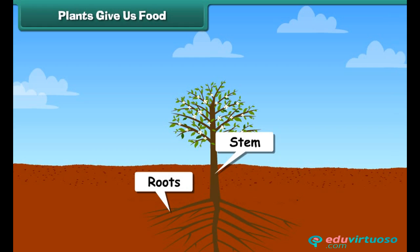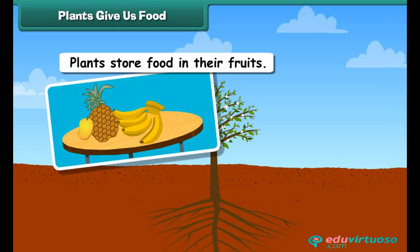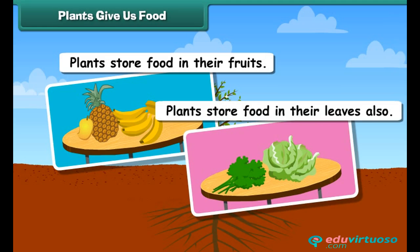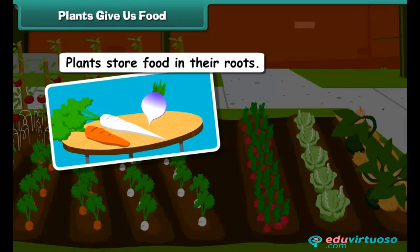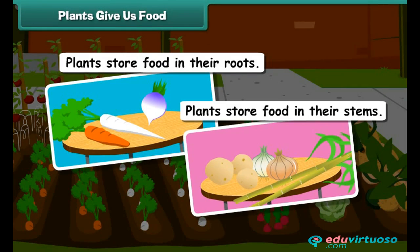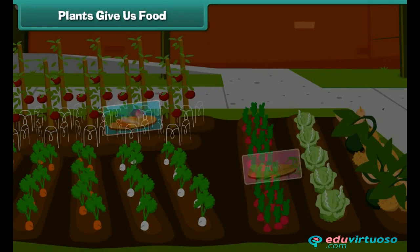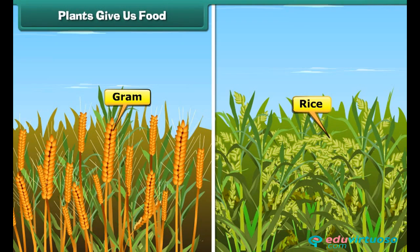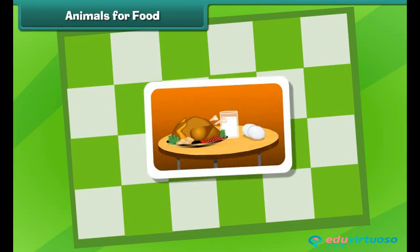We eat the stored food of plants in these plant parts — it is good for our health. Many plants store food in their fruits, some in their leaves, some in their roots, and some in their stems. Many plants also store food in their seeds, and we eat many of these seeds too.